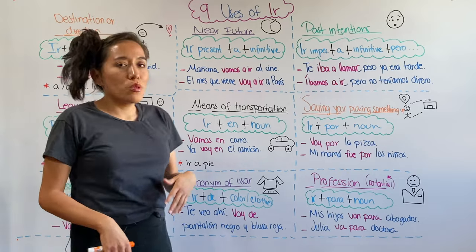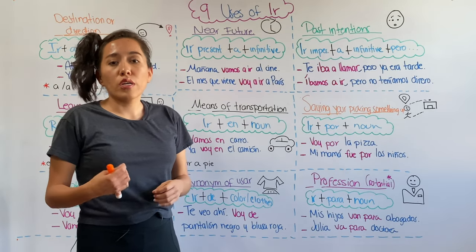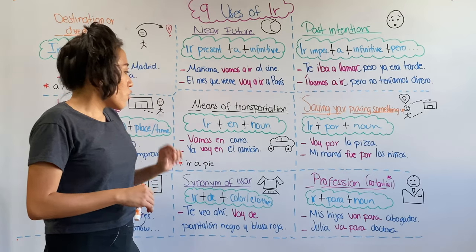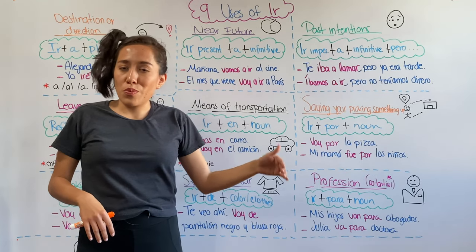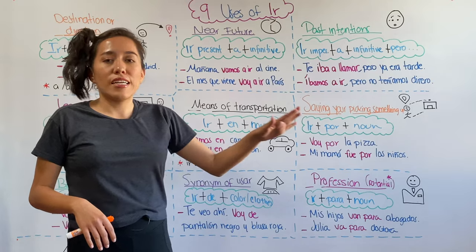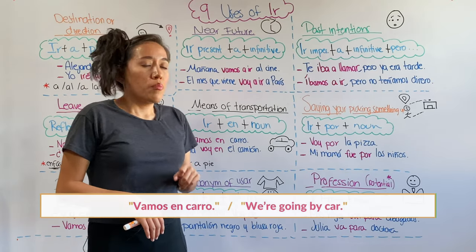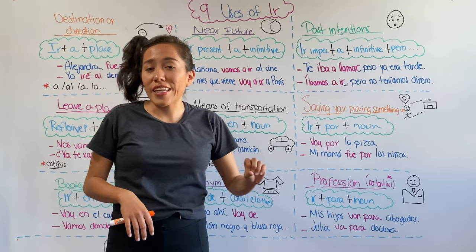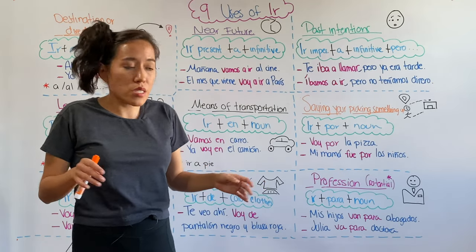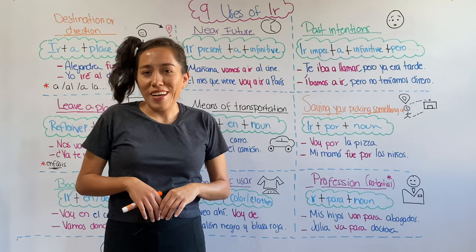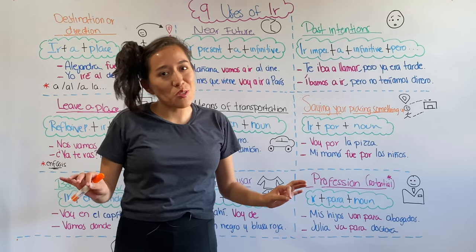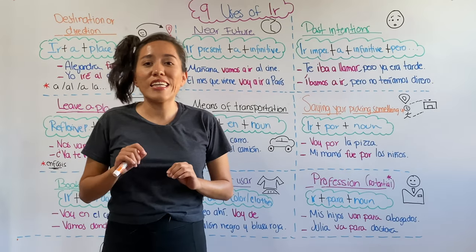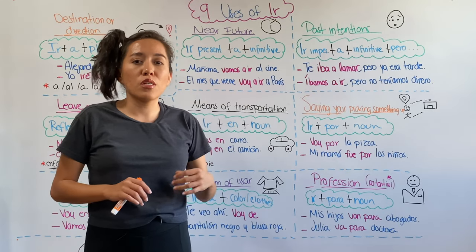Another common use of ir is to talk about the means of transportation you're using. To do this, you're going to use the preposition en plus a noun. For example, vamos en carro, or ya voy en el camión — I'm on the bus. However, there is an exception: if you're walking, you say ir a pie — going by foot.